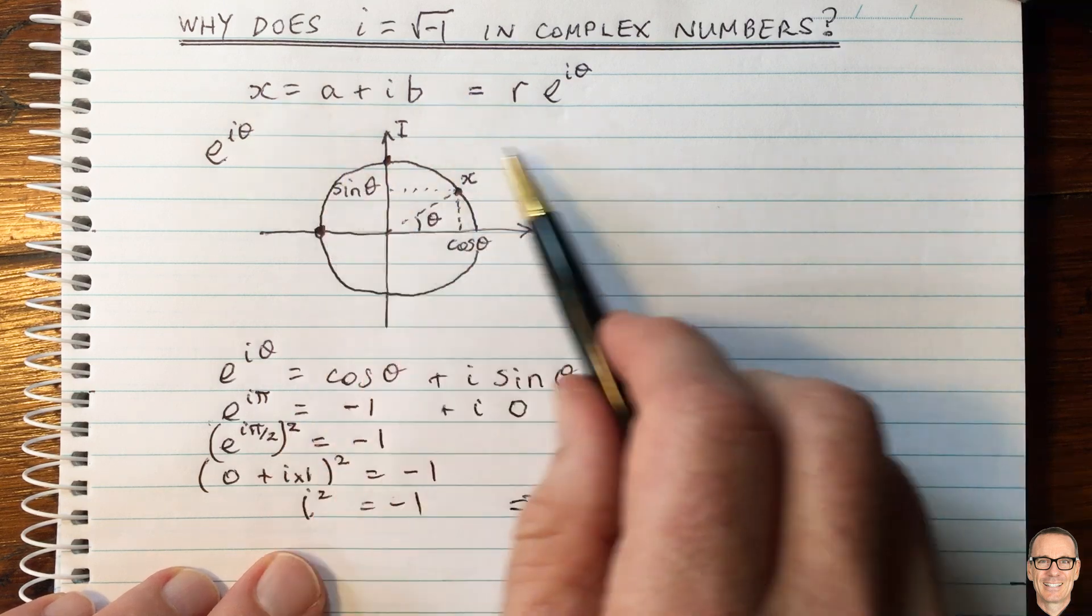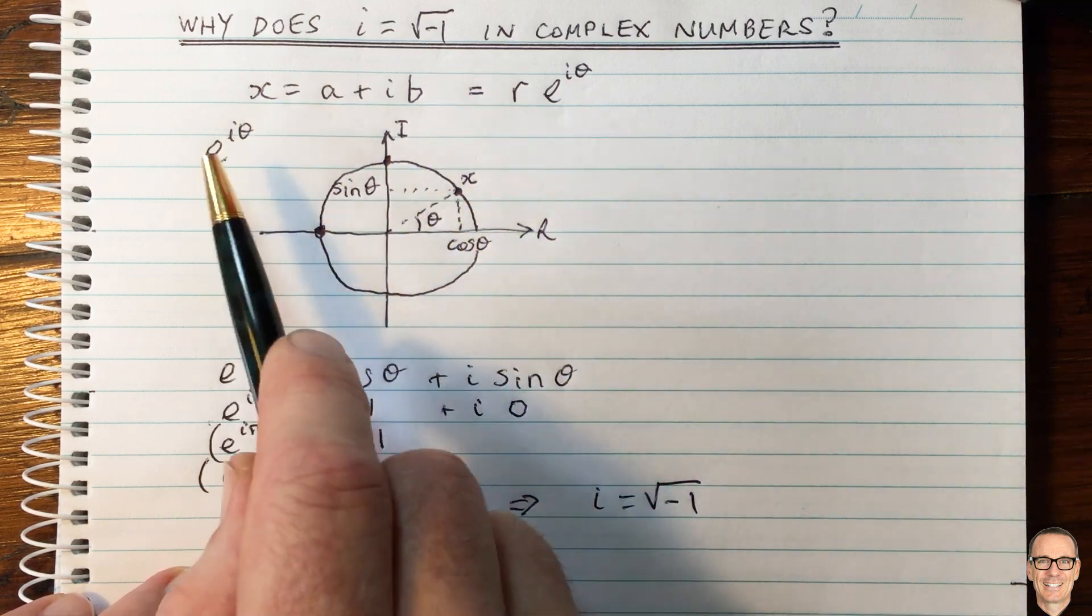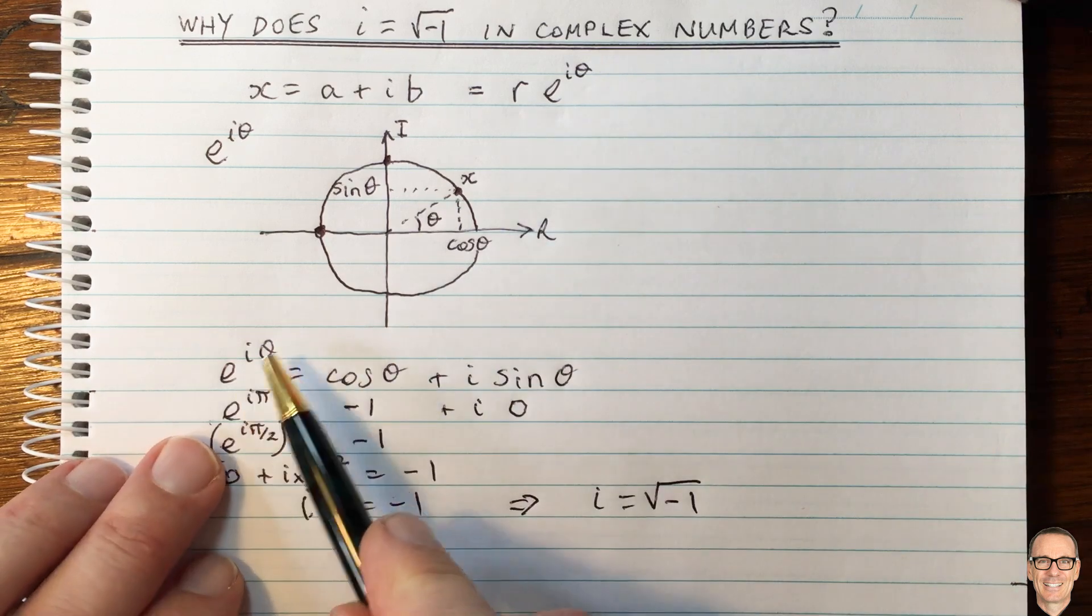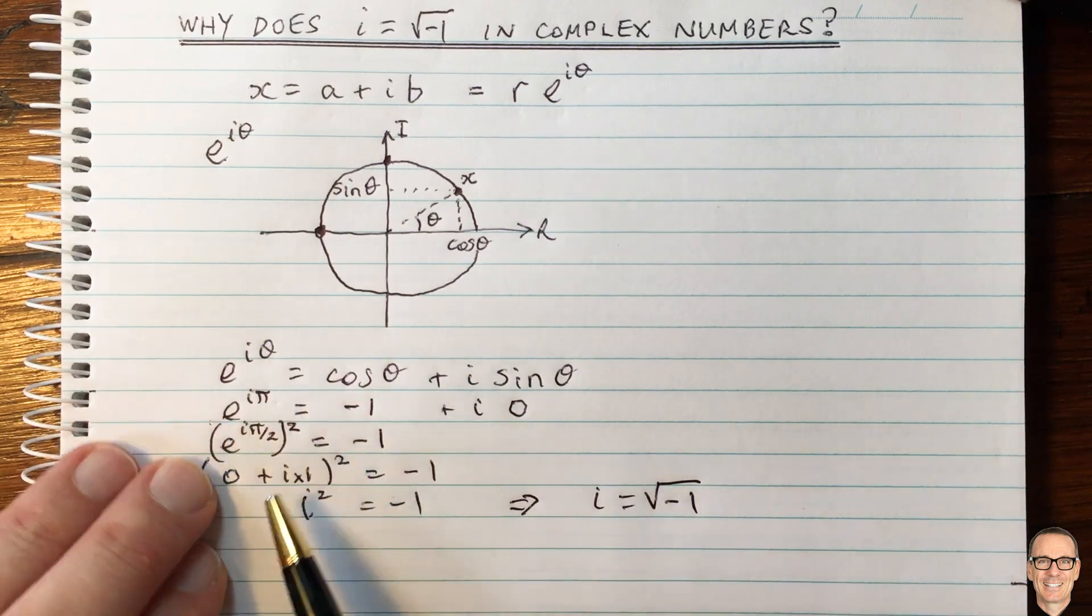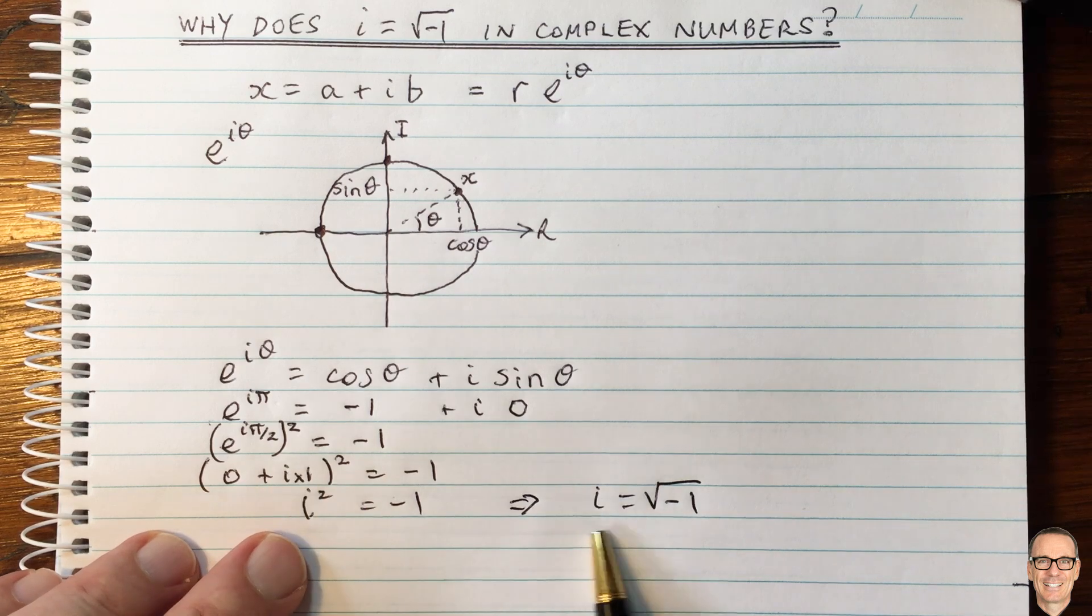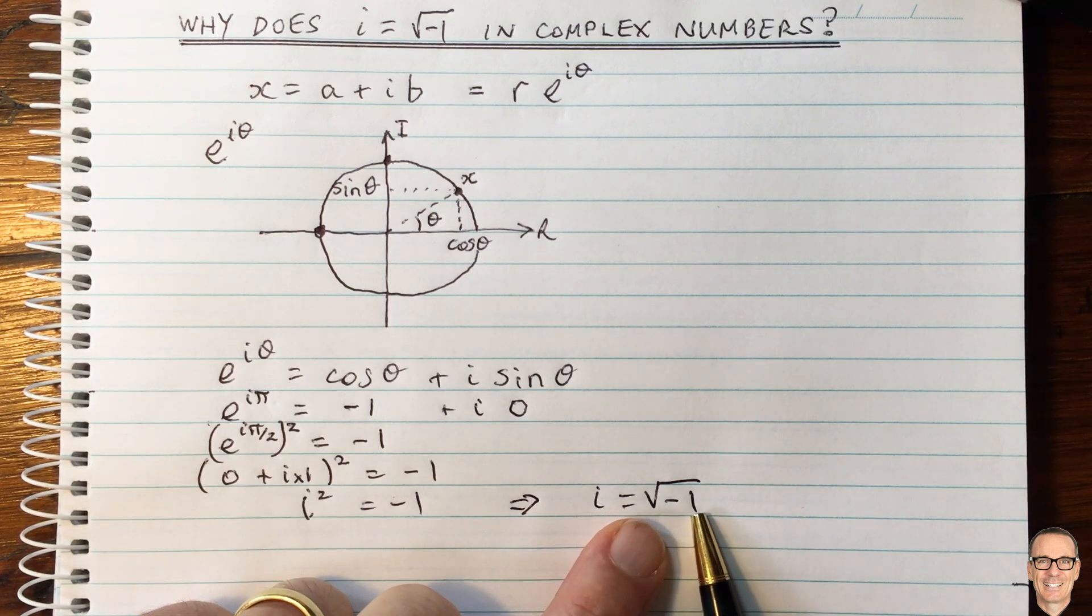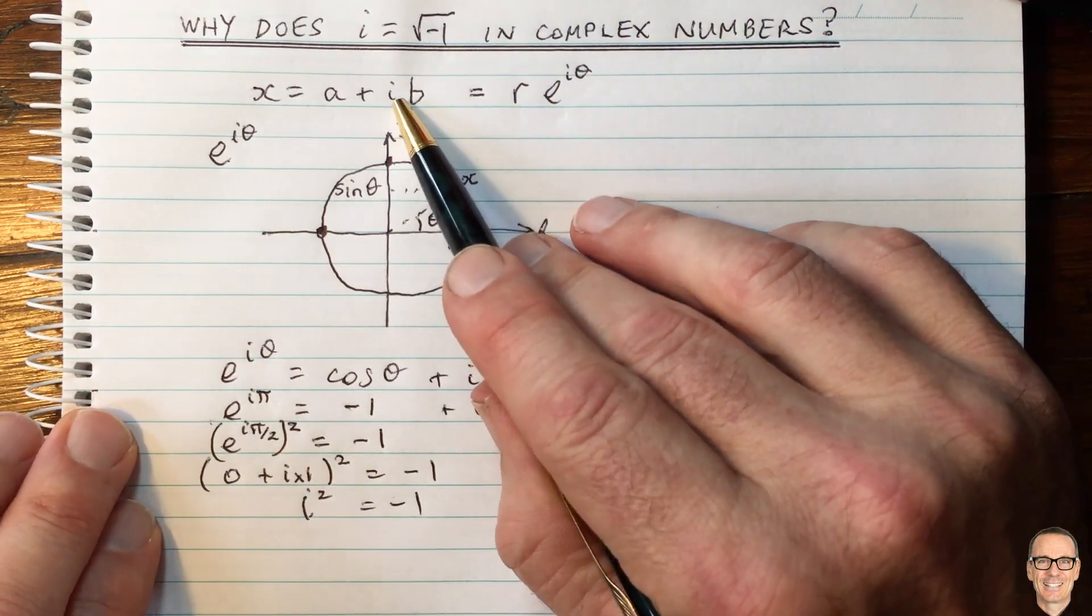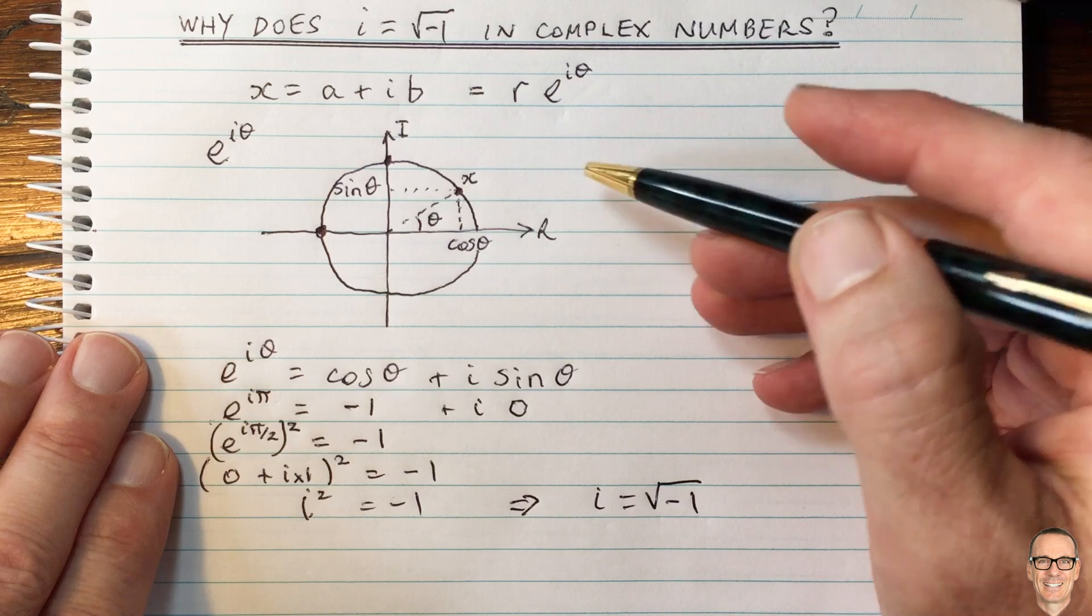So by understanding complex numbers, by using this particular case when the magnitude equals 1 and then looking at the value of theta at pi, realizing we can represent that as pi on 2, we managed to establish that i must equal the square root of minus 1. So hopefully this has given you more insights into the complex number, and in particular the complex variable i.